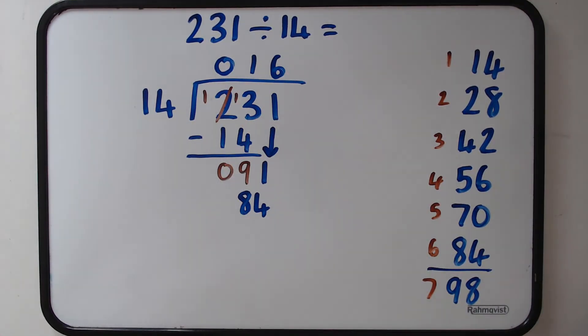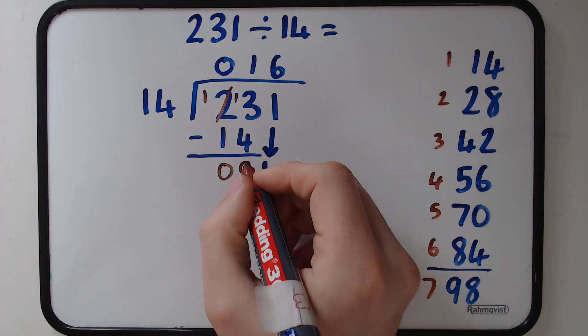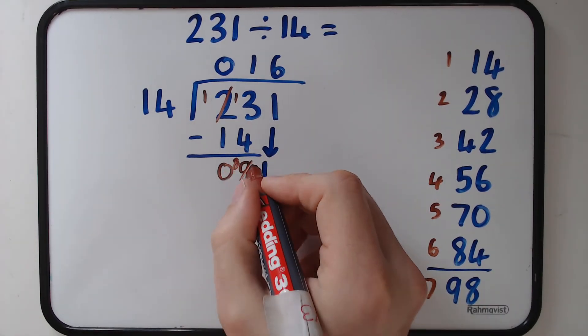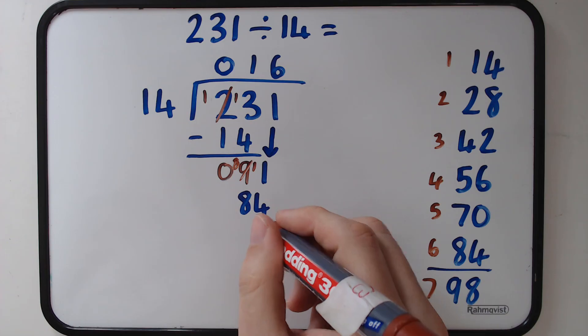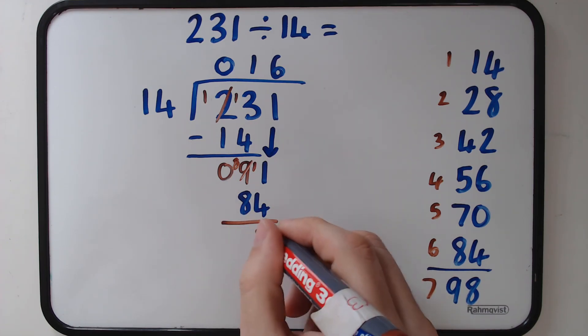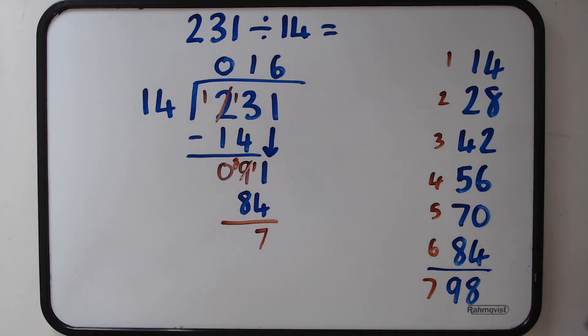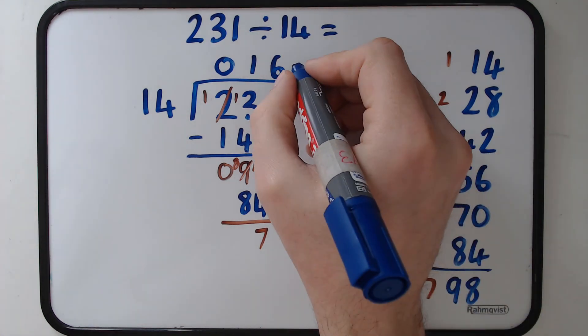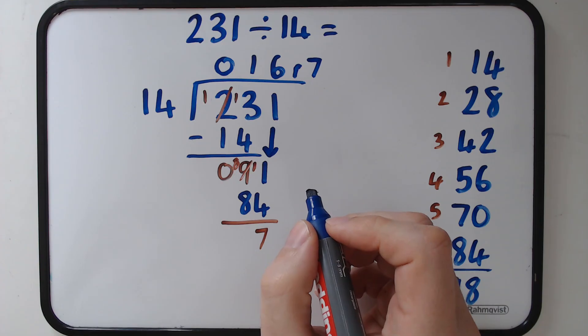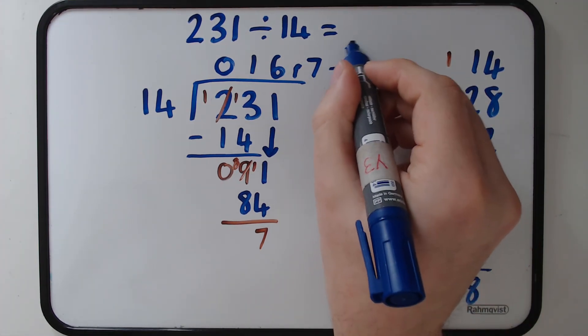We now need to do 91 take away 84. And again, I'll do just a little bit of column subtraction and it gives us the answer of 7. And that's going to be our remainder. So remember to put the remainder up on the top. So you've got 16 remainder 7. So the answer to 231 divided by 14 is 16 remainder 7.